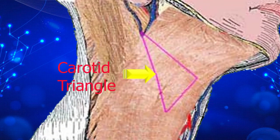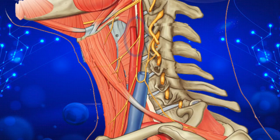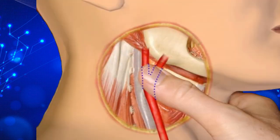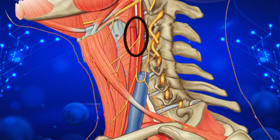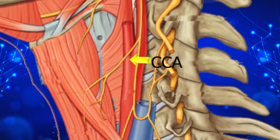Now the carotid triangle. The carotid triangle is a highly vascular area. It derives its name from the location of parts of all three carotid arteries within this area, which makes the triangle important. The pulse of the common carotid artery can be palpated by compressing it lightly against the transverse process of the cervical vertebra. At the level of the superior border of the thyroid cartilage, the common carotid artery divides into its two terminal branches: the internal and external carotid arteries.